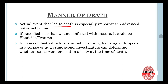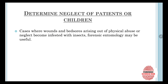The manner of death can also be estimated. This is especially important in advanced putrefied bodies. If a putrefied body has wounds infested with insects, it could indicate homicide or trauma. In cases of suspected poisoning, by using arthropods found in a corpse or at a crime scene, investigators can determine whether toxins were present in the body at the time of death.